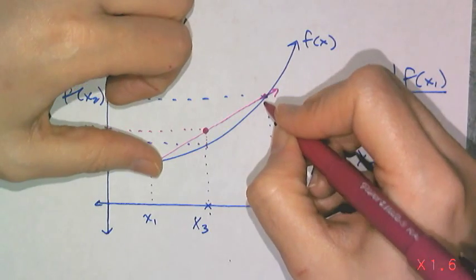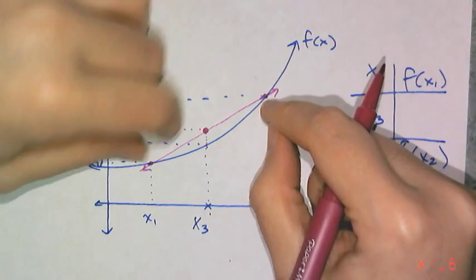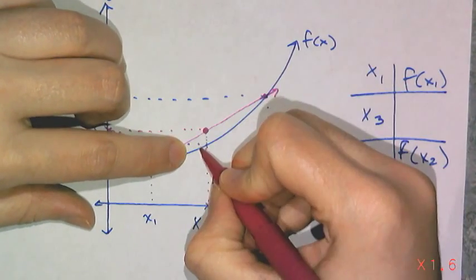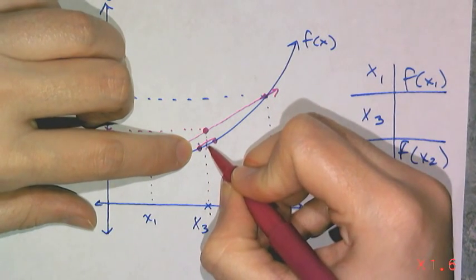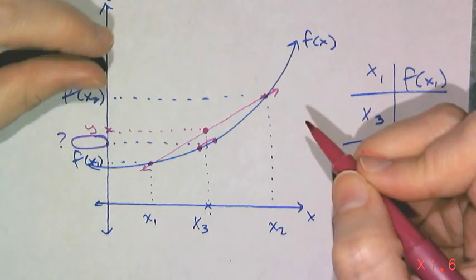The larger the interval you have, the more error you're going to have. So if you think about it, if I can shrink the interval where x1 and x2 are to maybe this point and this point, then the amount of error I'm going to have between my real y value and my approximation is going to be super, super, super tiny.